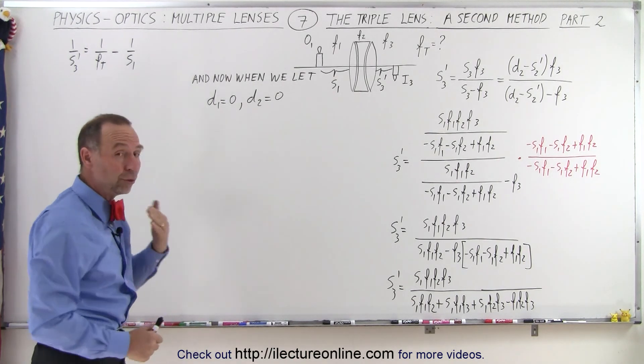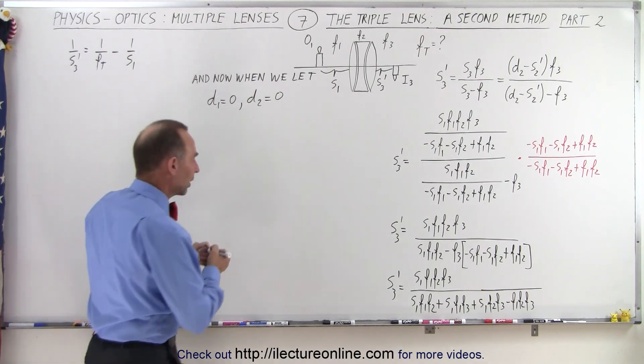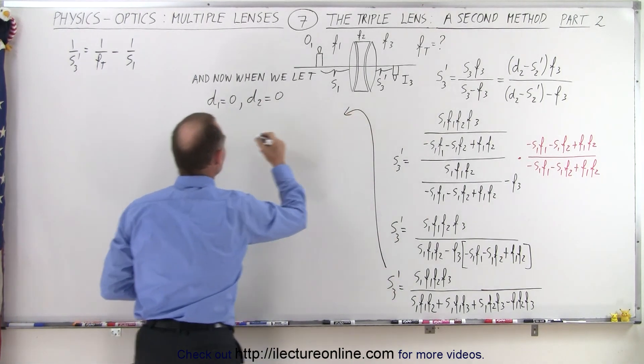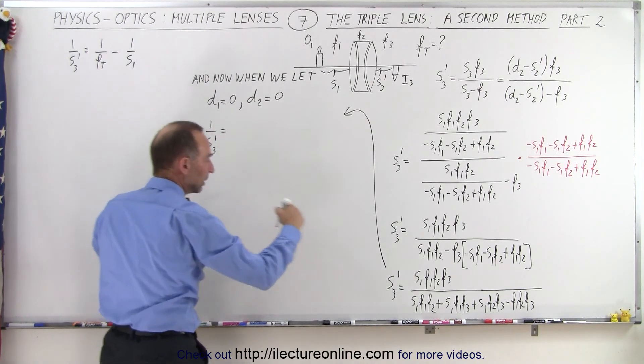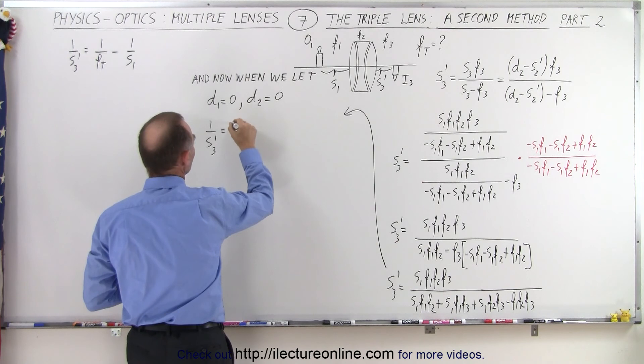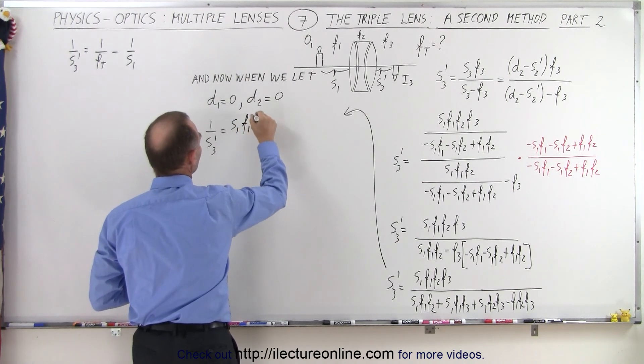Next what we want to do is we want to make it look like this, so I'm going to do now is take the inverse of that equation. So coming up here we're going to take 1 over s3 prime is equal to the inverse of that equation.